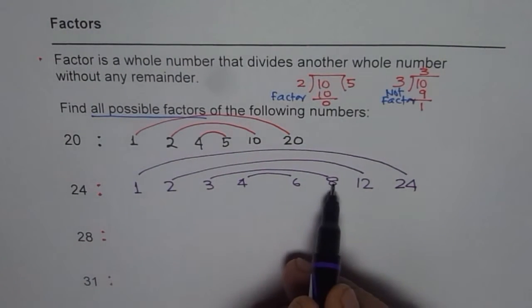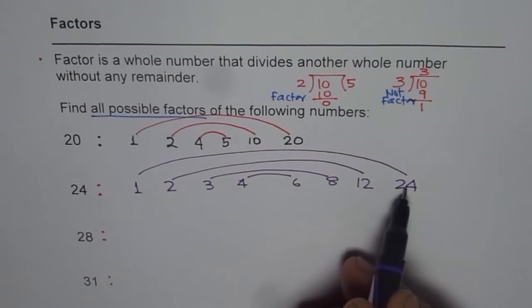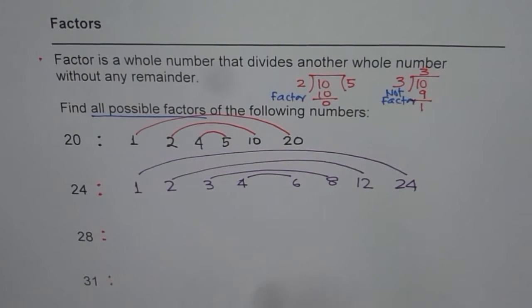So these are all the numbers. Next is 6 times 4, 8 times 3, 12 times 2, and 24 times 1. It repeats. So rainbow helps to figure out all the possible factors.